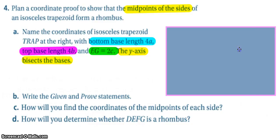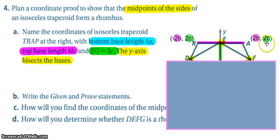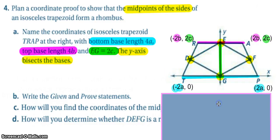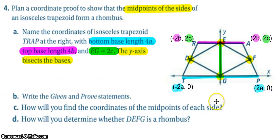All right, since we know that EG is 2C up, I know that the Y values for both R and A will be 2C. And since the top base length is 4B, I go 2B to the left and 2B to the right, because it says the Y axis bisects the bases. And then likewise on the bottom here, I know that the bottom base is 4A, so I go 2A to the left, 2A to the right, and they have a Y value of zero.